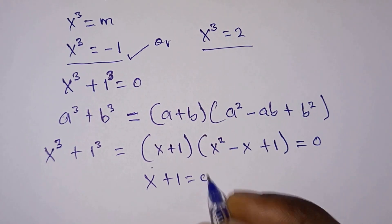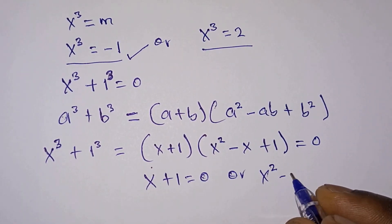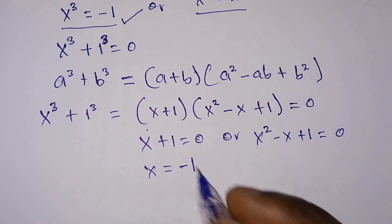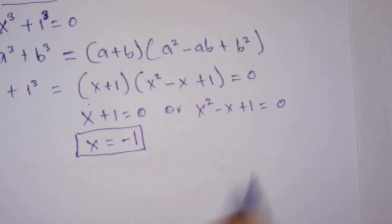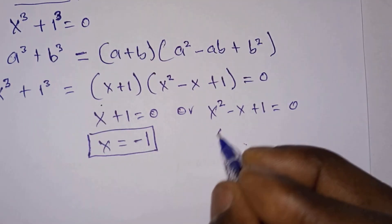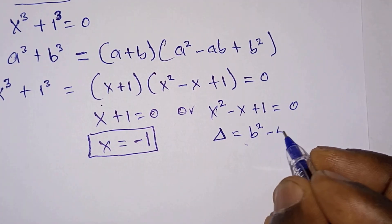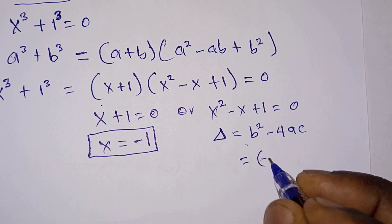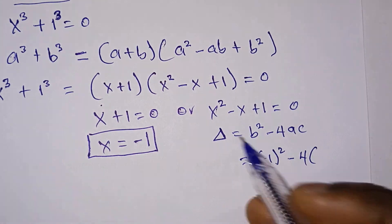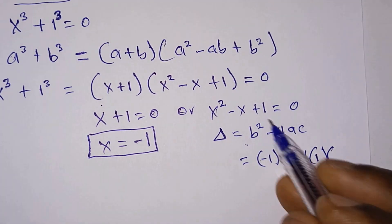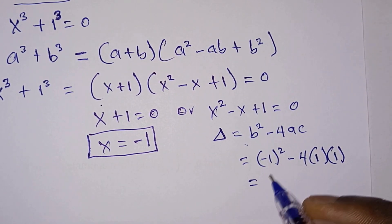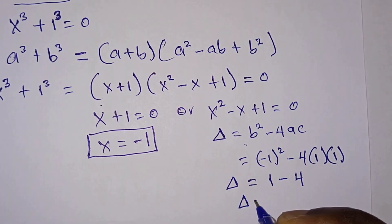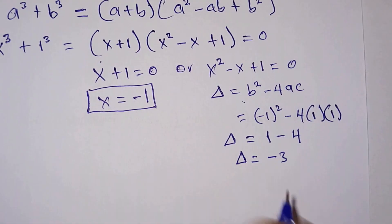From this factored equation, x plus 1 equals 0 or x squared minus x plus 1 equals 0. Straight away we can see that x equals negative 1 is one solution. For the quadratic factor, we find the discriminant: delta equals b squared minus 4ac, where b is the coefficient of x, which is negative 1. So delta equals negative 1 squared minus 4 times 1 times 1, which gives delta equals 1 minus 4 equals negative 3.